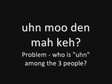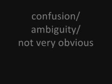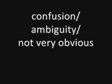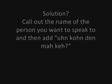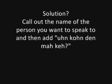How about if the situation is indirect? So three people in one room — 'N mu den maka.' Remember, mu is the verb 'to do.' The problem is, who is N among the three people? This creates confusion and ambiguity, and it's not very obvious. The solution would probably be to call out the name of the person you want to speak to, and then add 'N konden maka' or 'N mu den maka.' For example, 'Akame N mu den maka' — where Akame is a name.